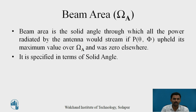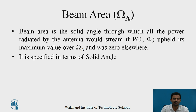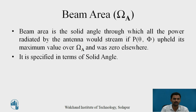So what is beam area? Beam area is the solid angle through which all the power radiated by the antenna would stream if P(θ,φ) upheld its maximum value over the beam area and was zero elsewhere. That means whenever an antenna is radiating energy, it will not radiate equally in all directions. Beam area is the area surrounding the antenna through which we are getting energy, and in the remaining areas we are getting zero energy. Beam area is always specified in terms of solid angle, which we have already studied from the first part of this video.